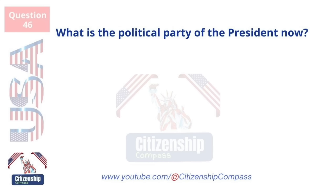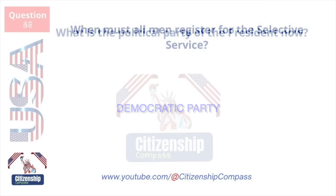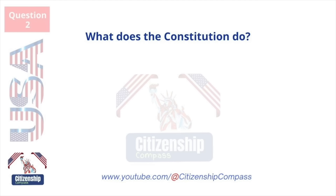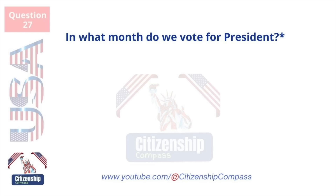What is the political party of the president now? Democratic Party. When must all men register for the Selective Service? At age 18. What does the Constitution do? Sets up the government. In what month do we vote for president? November.